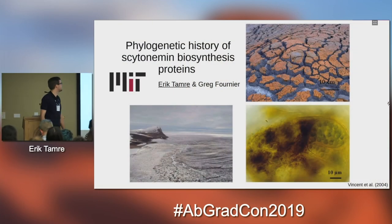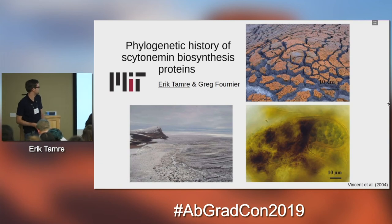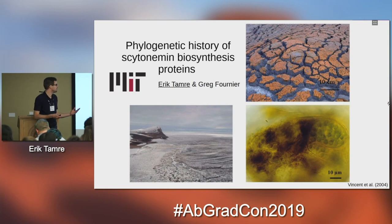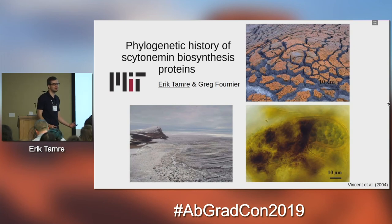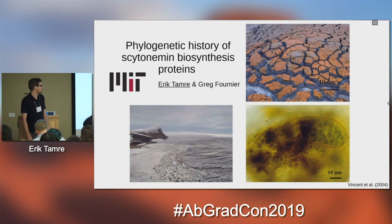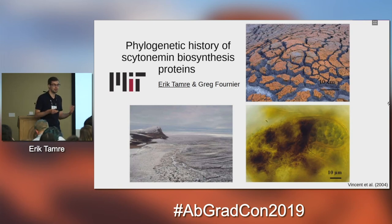Hi, I'm Eric and this is an ice shelf just off the north coast of Ellesmere Island in the Canadian Arctic. This is interesting for my purposes because this ice shelf has some relatively extensive microbial mats covering it that are dominated by cyanobacteria, and in particular these cyanobacteria have some of the highest concentrations of scytonemin, a pigment that we're going to be talking about.